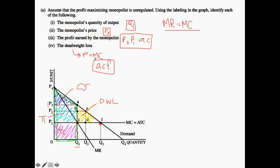So that is Part A — Part A is just asking you to assess the classic monopoly situation. Let's move on to Part B now.